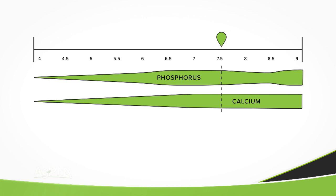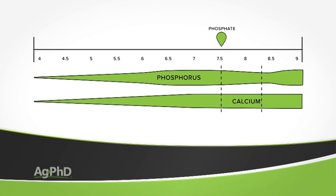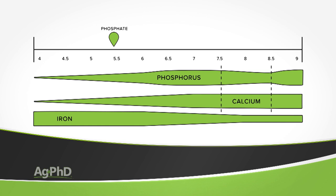The same thing can happen with phosphorus at low pH. That calcium binding happens predominantly in the 7.5 to 8.5 pH range. When pH is down in the 5s, we commonly see phosphate binding with iron. When it's down in the 4s, we commonly see phosphate binding with aluminum. In either case, the phosphorus is in the soil but it's binding with another element, so plants can't get it and use it. That's a real problem.